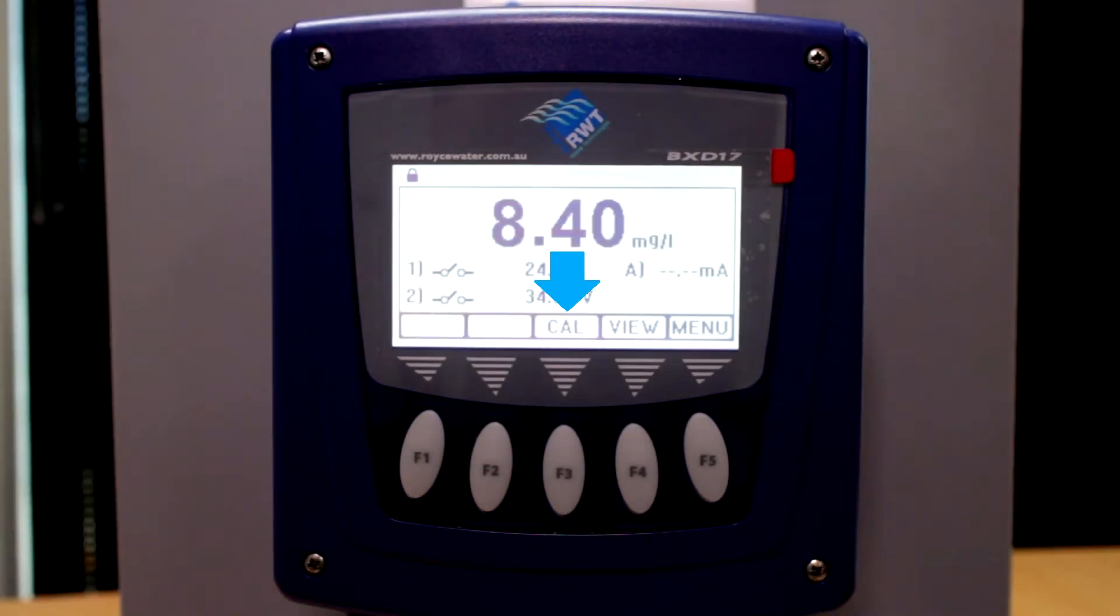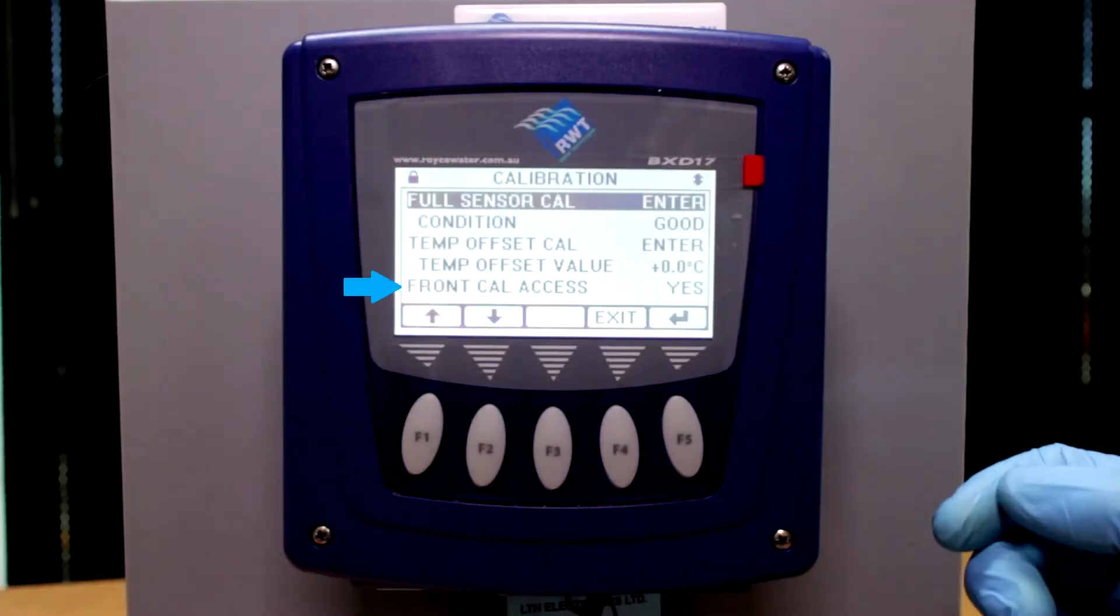A shortcut to the calibration option can be found on your front screen using the F3 key. If this option is not showing, it can be switched on using the calibration menu.